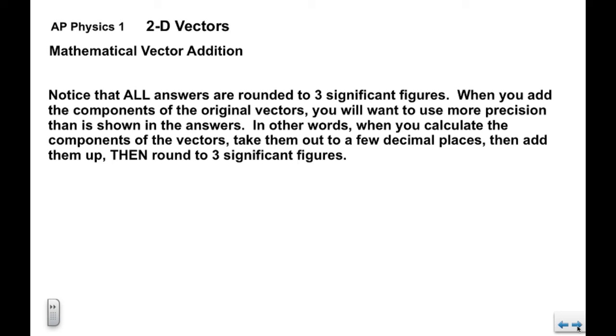Now you want to notice that all answers are rounded to three significant figures. When you add the components of the original vectors, you probably want to use more precision than you show in your answers. In other words, when you calculate the components, you're going to take them out to a few decimal places, maybe five or six significant figures, then add them up and then round your final answer to three significant figures. So be careful with that.